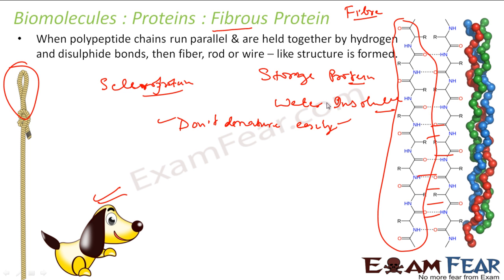Fibrous proteins generally have primary and secondary structure; they don't have tertiary structure. You will understand more about tertiary structure when we discuss globular proteins, because globular proteins have primary, secondary, and tertiary structure all. Fibrous proteins are water-insoluble and are storage proteins found only in animals.